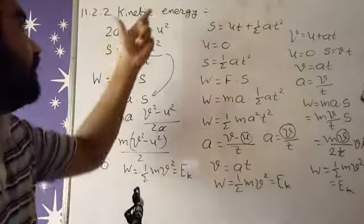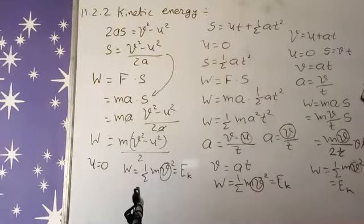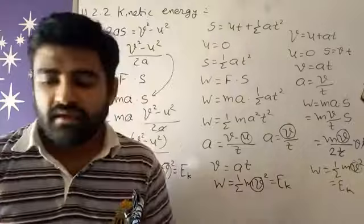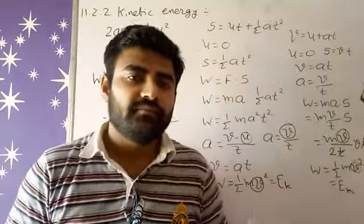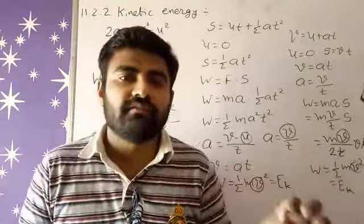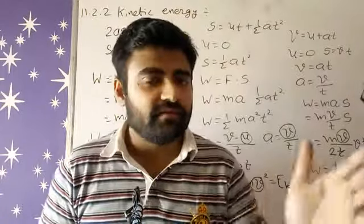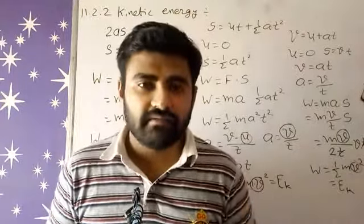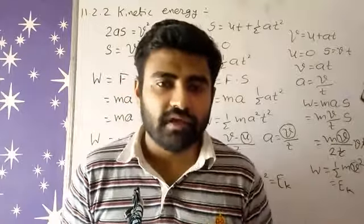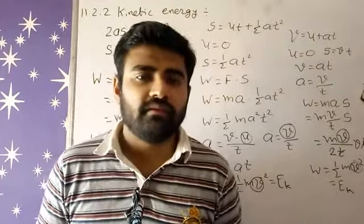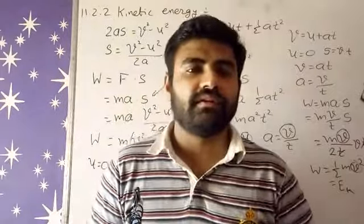Kinetic energy always relates with motion — if an object has some velocity, it possesses kinetic energy. Examples of kinetic energy: when wind is blowing, wind has some velocity and wind molecules also have some mass, so it has kinetic energy. Similarly, if a car is moving on a road with some velocity and it has mass, it possesses kinetic energy. Even a bullock cart has mass and some smaller velocity, so it also has kinetic energy.